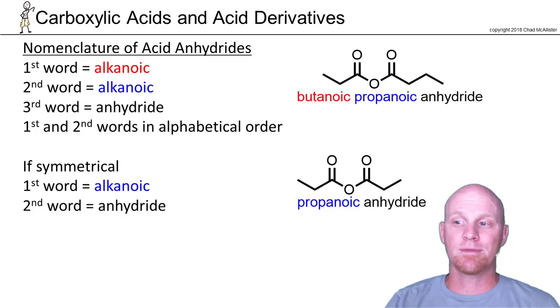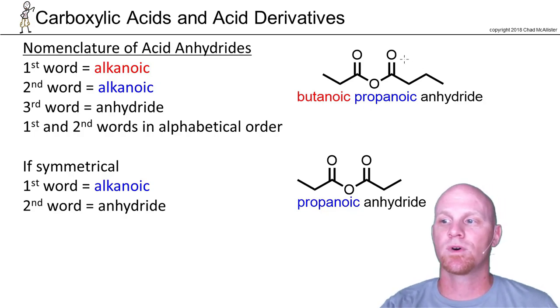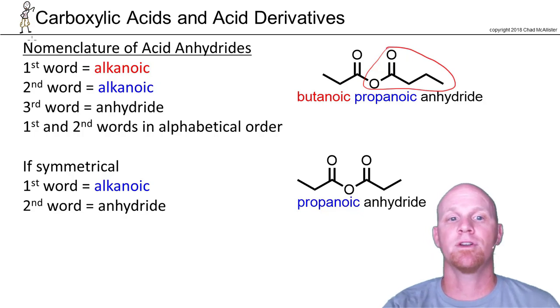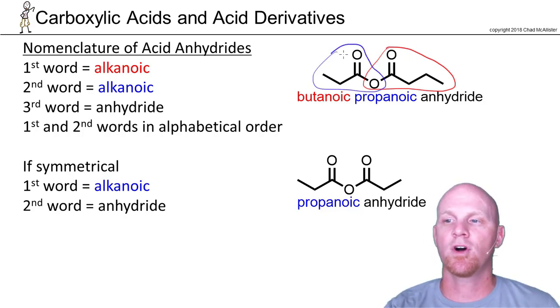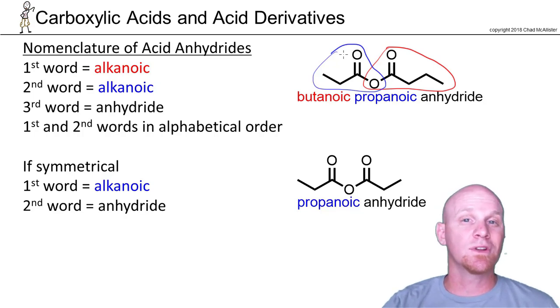We're going to name it in kind of a funky way. If you take a look at this one we've got here, this side comes from butanoic acid, this side right here comes from propanoic acid. If you combine the two and lose water in the process—and again that may not be actually how it forms—but you can kind of envision that's where butanoic propanoic anhydride comes from.